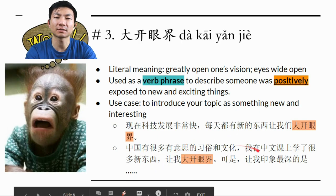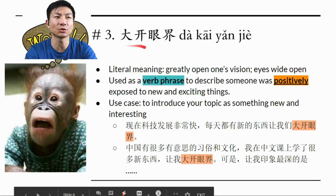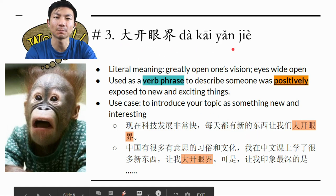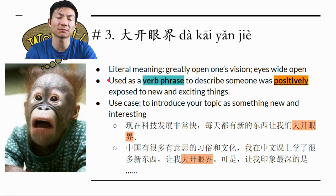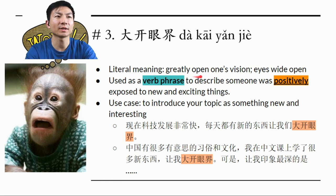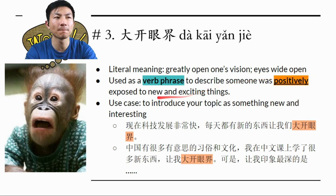Let's take a look at the third 成语: 大开眼界. 大开眼界 is an idiom that you should be pretty familiar with already. The literal meaning is 'greatly open one's vision' — have somebody's eyes wide open.